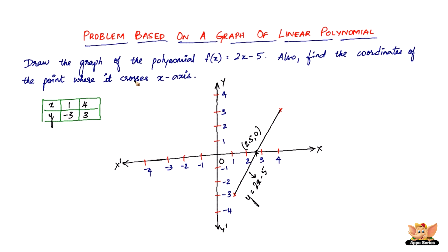So yeah, here we are. So what we've done is we've drawn the graph of the given equation and also we've found the coordinates of the point where it crosses the x-axis. So this is what it is to plot a graph of a linear polynomial. So I'll see you in the forthcoming video with a problem based on a graph of quadratic polynomial.